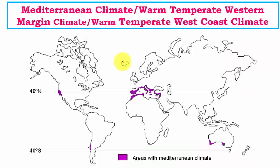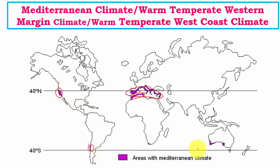Mediterranean type of climate is found on the west coast in the subtropical region. It includes northern parts of Africa, southern parts of Europe, parts of California around San Francisco, Central Chile, and Western Australia's Swanland. All these regions come under Mediterranean type of climatic regions.